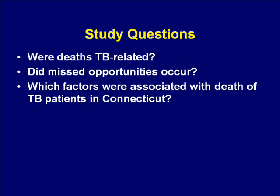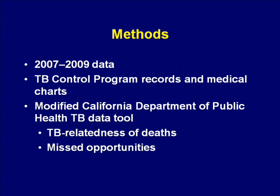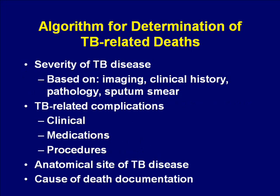CDC recommends that all deaths in persons with TB be reviewed to determine if they could have been prevented and to help guide policies to reduce these deaths. However, there's no standardized method for this review, and few programs actually perform these reviews. We decided to do an analysis of TB deaths with three questions in mind: first, were the deaths TB-related — meaning did people actually die from TB or TB treatment? Second, were there missed opportunities in diagnosis and treatment among patients with TB-related deaths? Third, are there certain factors associated with death of TB patients in our state? All deaths during 2007 to 2009 were systematically reviewed, including TB program records and all available medical charts. A tool developed by the California Department of Public Health was modified for this project to assess both TB-relatedness of deaths and missed opportunities.